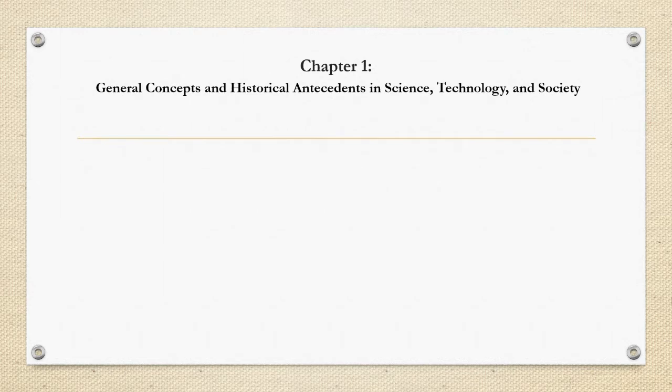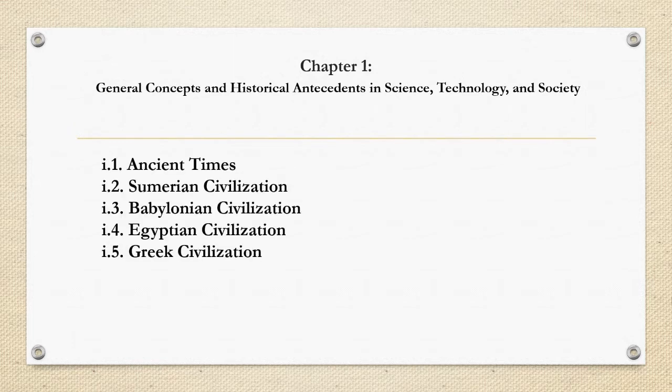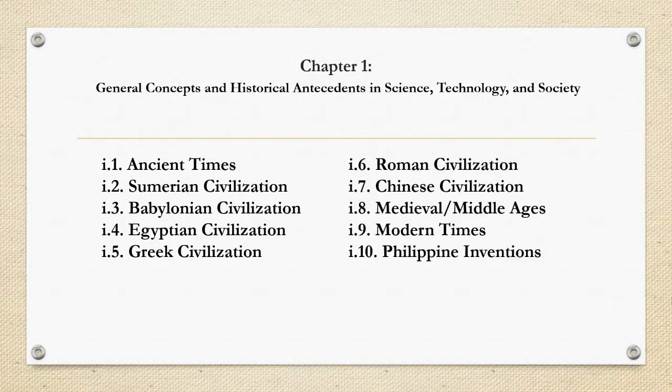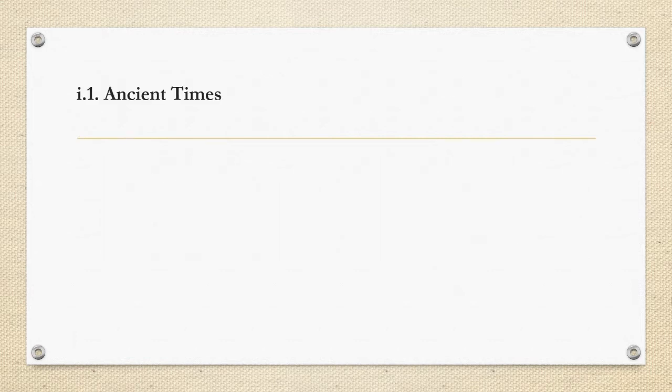Chapter One is about the general concepts and historical antecedents of science, technology, and society. Under this, we are going to talk about the ancient times — the Sumerian civilization, the Babylonian civilization, the Egyptian civilization, the Greek civilization, the Roman civilization, the Chinese civilization, the medieval or middle ages, the modern times, and lastly, Philippine contributions.